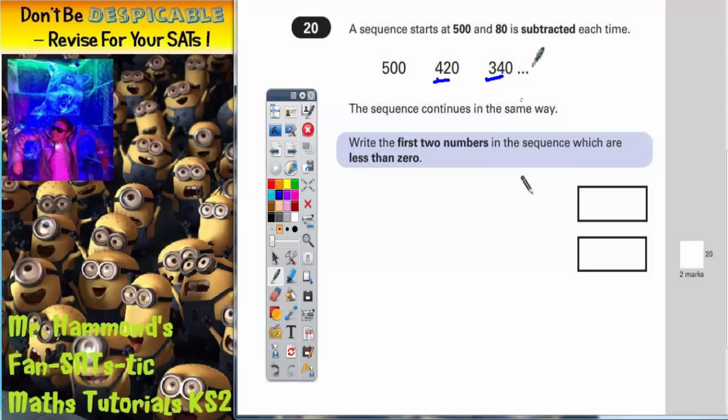34 take away 8 is 26. Put the 0 at the end. 26 take away 8 is 18. Put the 0 at the end. 18 take away 8 is 10. Put the 0 at the end. 10 take away 8 is 2. Put the 0 at the end. So now we're down to just 20.